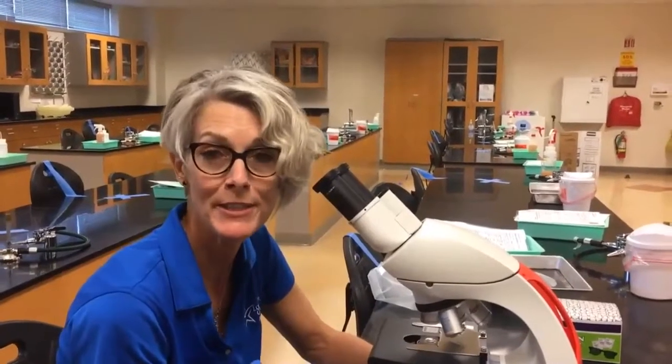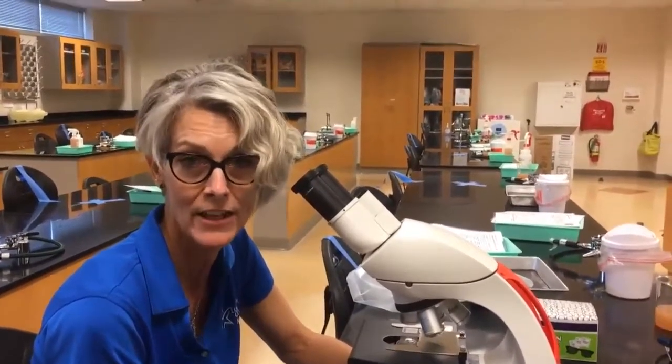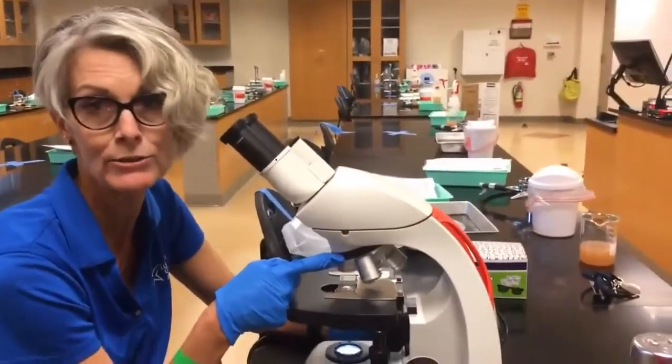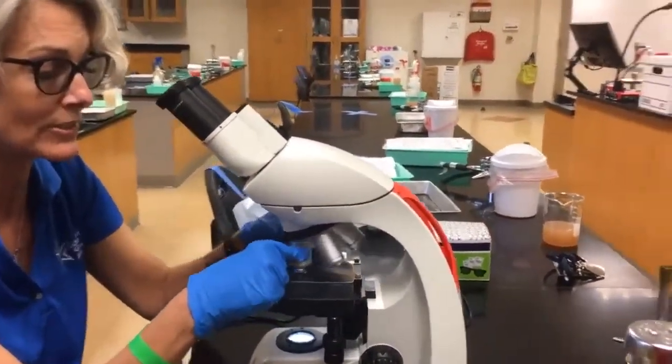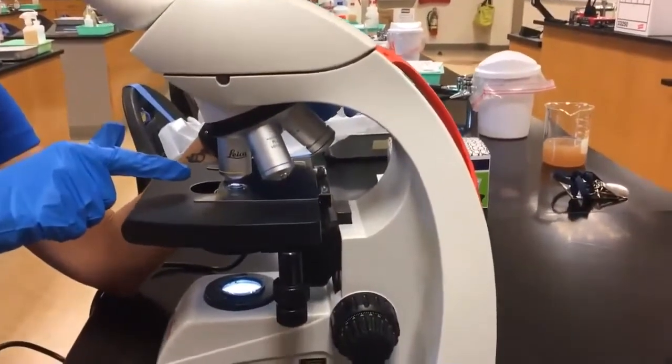Once you have your specimen in focus under your scanning lens, go ahead and rotate your revolving nose piece clockwise to your low power objective lens. That is going to have a yellow rim on it.